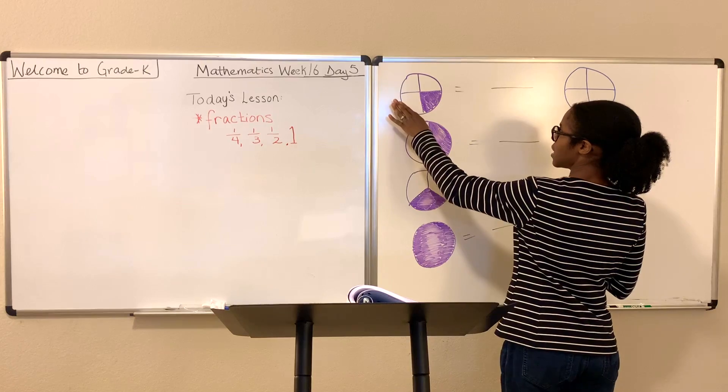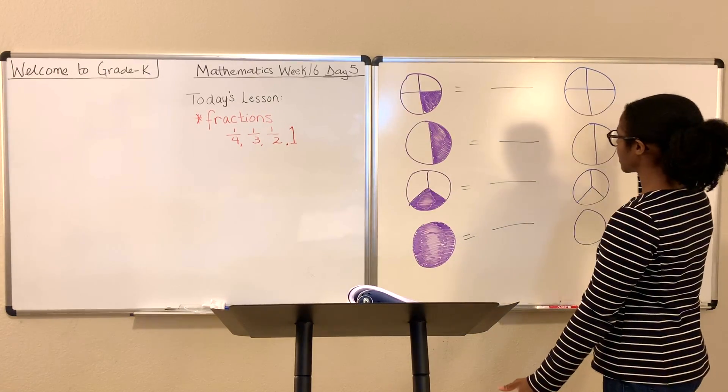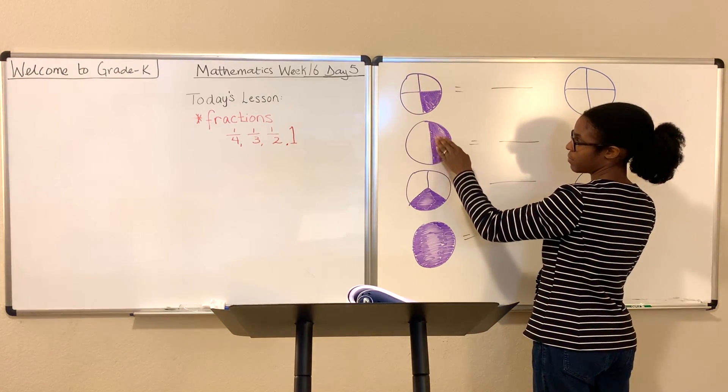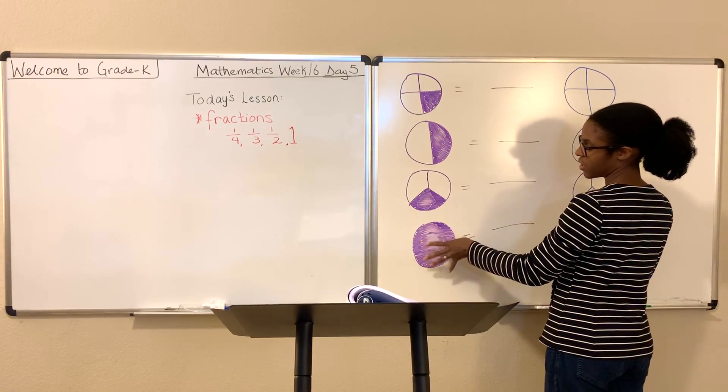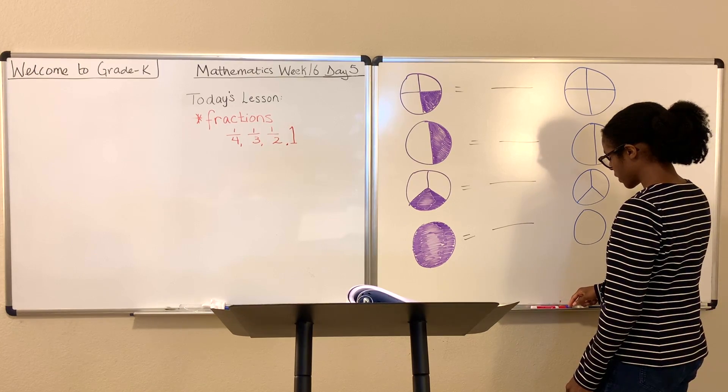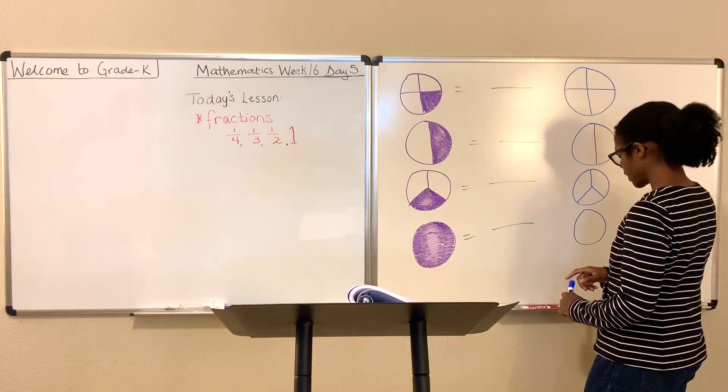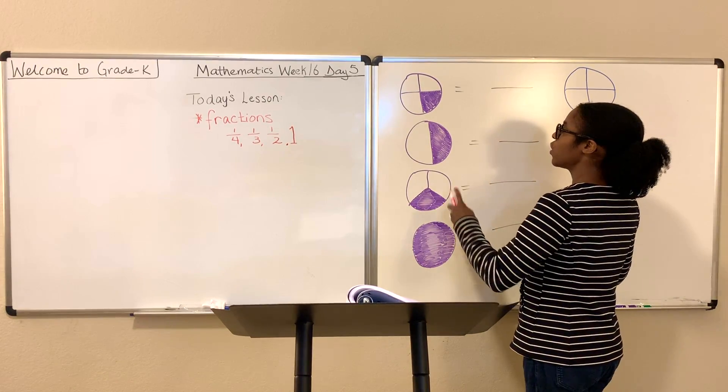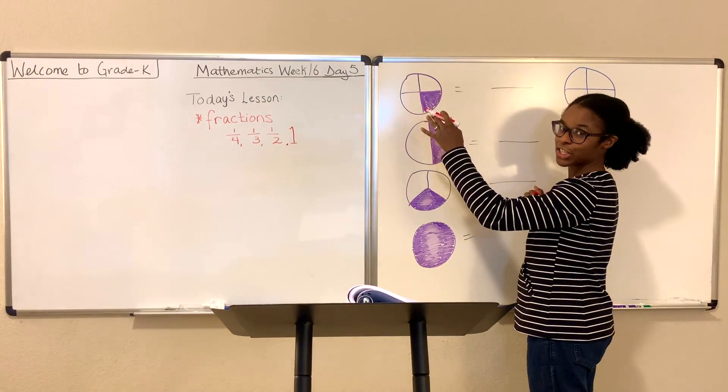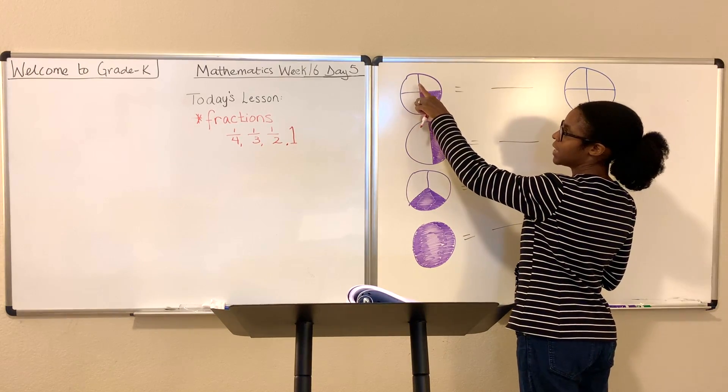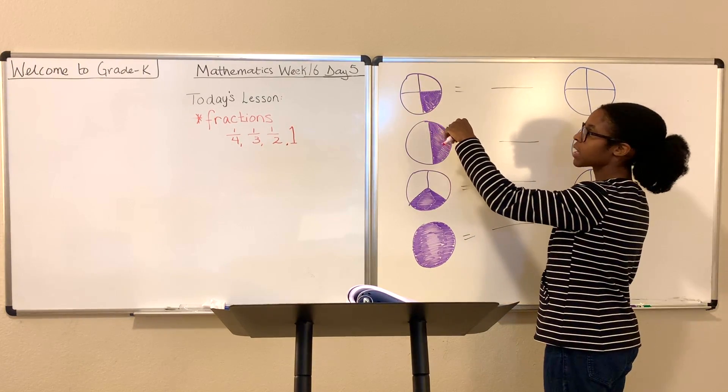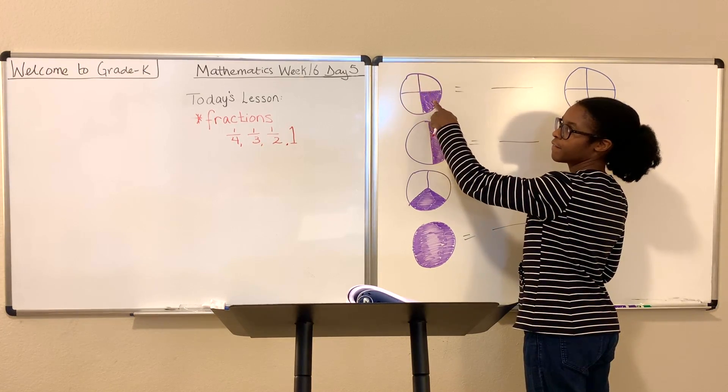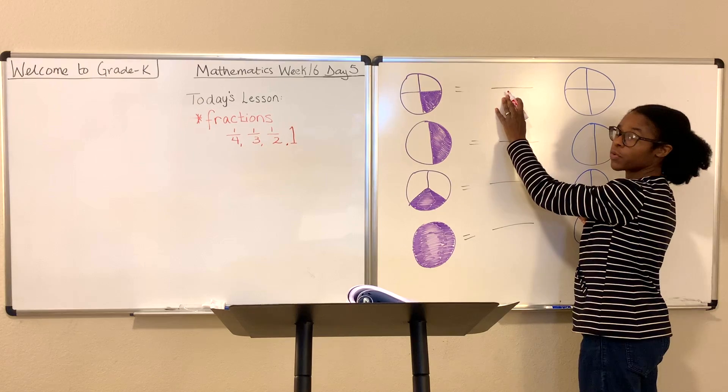So this is what you see on your worksheet, something like this. You have one part shaded, one part shaded, one part shaded, and a whole shaded. And I'm just going to interpret what this means. Some of you may already know, but for those of you who don't. Okay, so I have a question to ask you. How many parts is this circle divided into? It's divided into 1, 2, 3, 4.